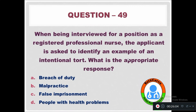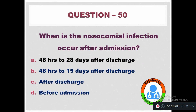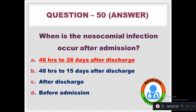Question 50: When does a nosocomial infection occur after admission? Option A: 48 hours to 28 days after discharge. Option B: 48 hours to 15 days after discharge. Option C: After discharge. Option D: Before admission. The right answer is 48 hours to 28 days after discharge.